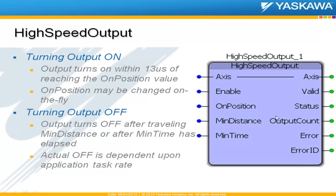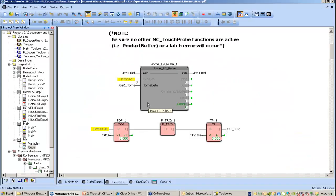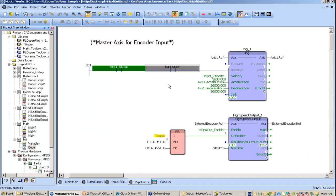To turn the output on, it will turn on within 13 microseconds of reaching the on-position value that has been set, and this on-position value may be changed on the fly. To turn it off, it will turn off after traveling either the minimum distance that's set or the minimum time that is set — one of those two inputs. The actual off is not high-speed; it is dependent upon the application task rate of where you've placed this function block.